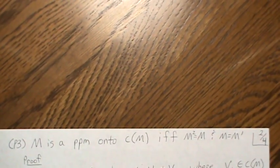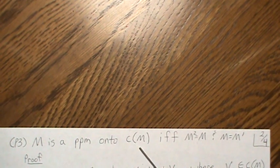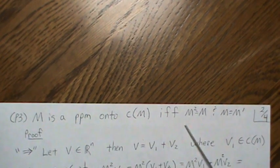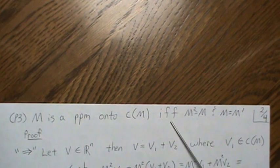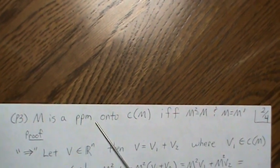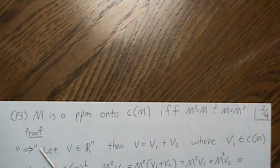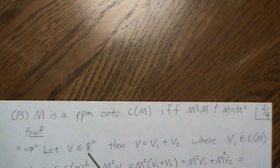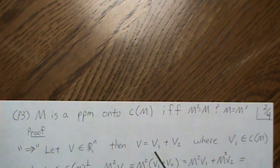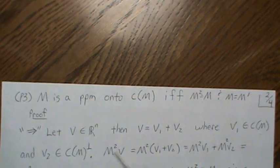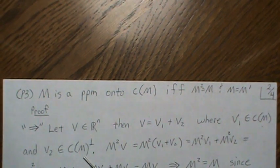Property three: M is a perpendicular projection matrix onto the column space of M if and only if M is idempotent (M² = M) and symmetric (M' = M). Since it's an if-and-only-if, we need to prove both directions. First, assume M is a PPM. Let V be an arbitrary vector in Rⁿ; write V = V1 + V2 where V1 is in the column space of M and V2 is in the orthogonal complement of the column space of M.